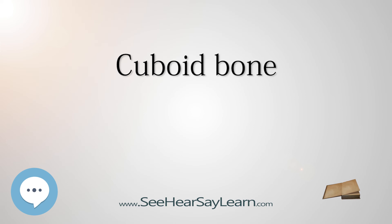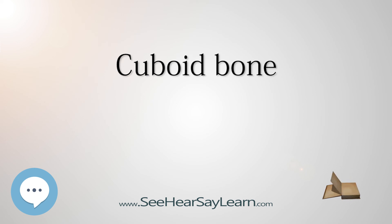Only one muscle is attached to the cuboid bone: the tibialis posterior. The tibialis posterior inserts to the undersurface of the cuboid bone, while the flexor hallucis brevis arises by a pointed tendinous process from the medial part of the undersurface of the cuboid bone, from the contiguous portion of the lateral cuneiform bone, and from the prolongation of the tendon of the tibialis posterior.